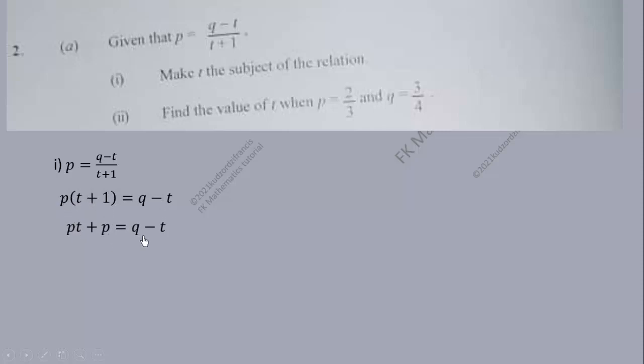Now let's group the terms containing t since that is what we are making the subject. So we obtain pt plus t is equal to q minus p.